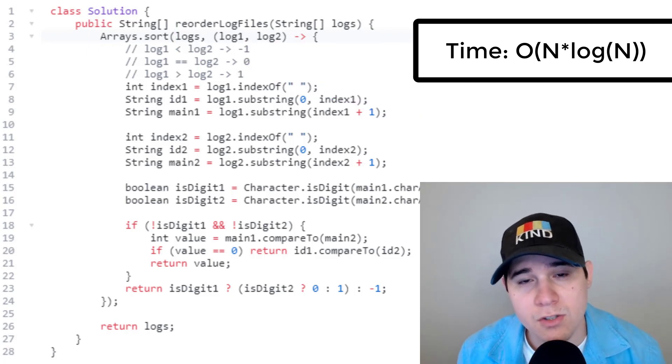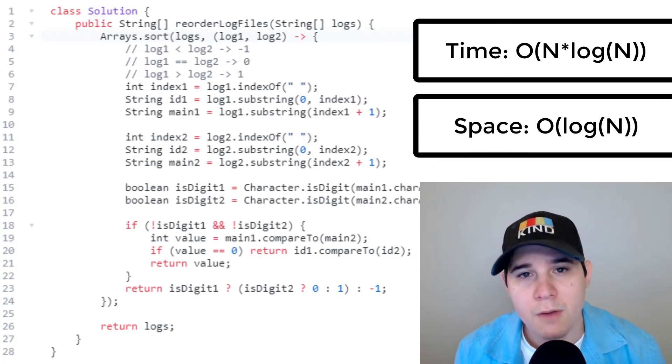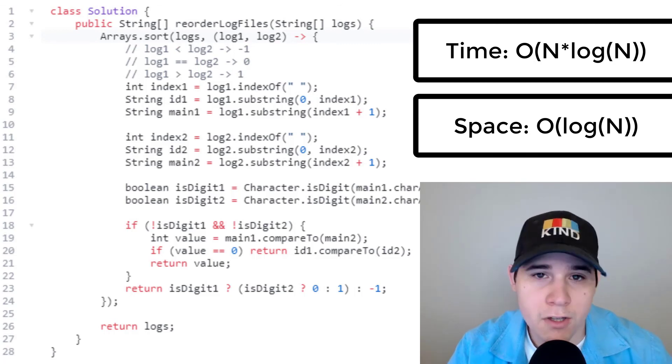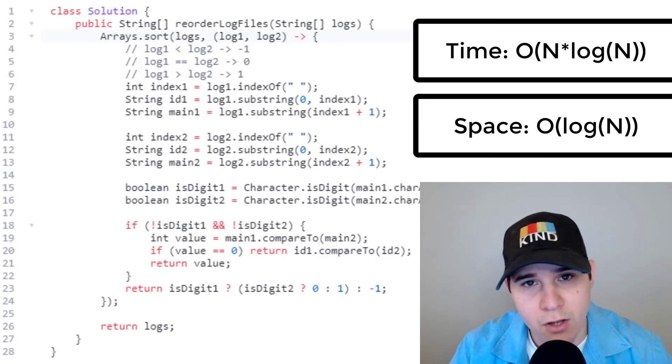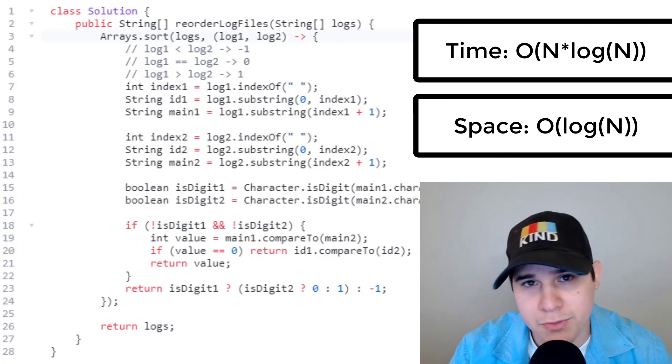And then as for our space complexity, it's going to be big O of log of N for the recursive calls that it makes. Even if you implemented quicksort yourself under the hood and you tried to use an iterative algorithm to implement it, you would still have to utilize a stack.